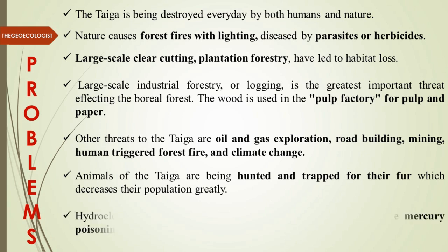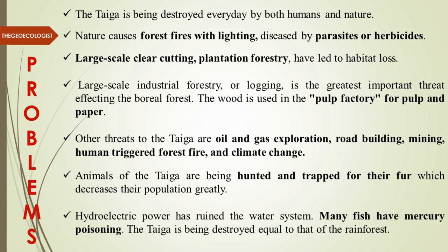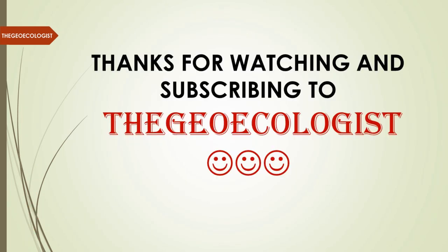Animals of the Taiga are being hunted and trapped for their fur, contributing to biodiversity loss. Hydroelectric power development has ruined natural water systems, impacting freshwater fish in rivers, with many fish suffering mercury poisoning. There are many environmental issues that need to be addressed, and there has to be a balance between economic practices and environmental practices — that is the need of the hour for the Taiga biome.